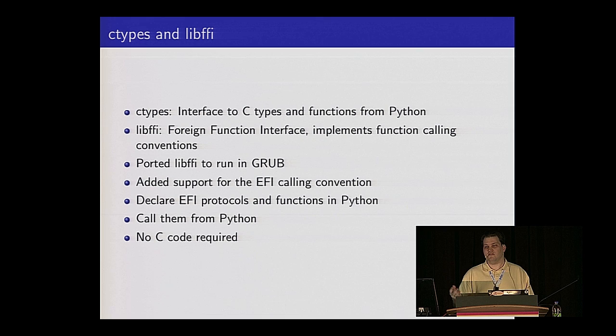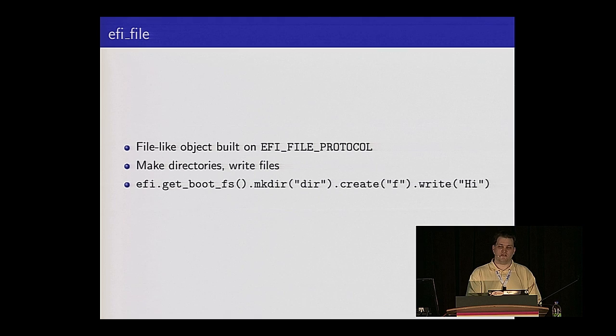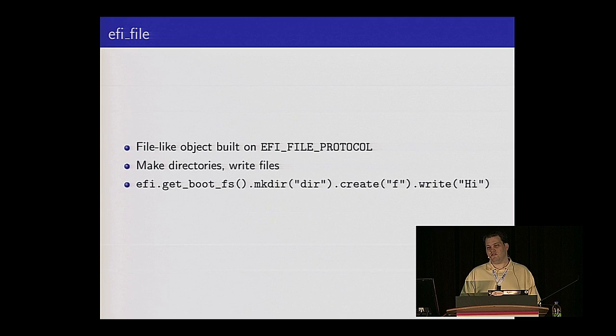What kinds of things can we do with this beyond hello world? We've got a binding for the EFI file layer that uses the EFI file protocol. Unlike Grub's file layer, it actually knows how to write to a file system and not just read it. So we can do things like: go get the boot file system, make a directory in it, create a file in that directory, and write some contents to it. We created a file-like object on top of this interface that gives you all the standard things you expect from a Python file.